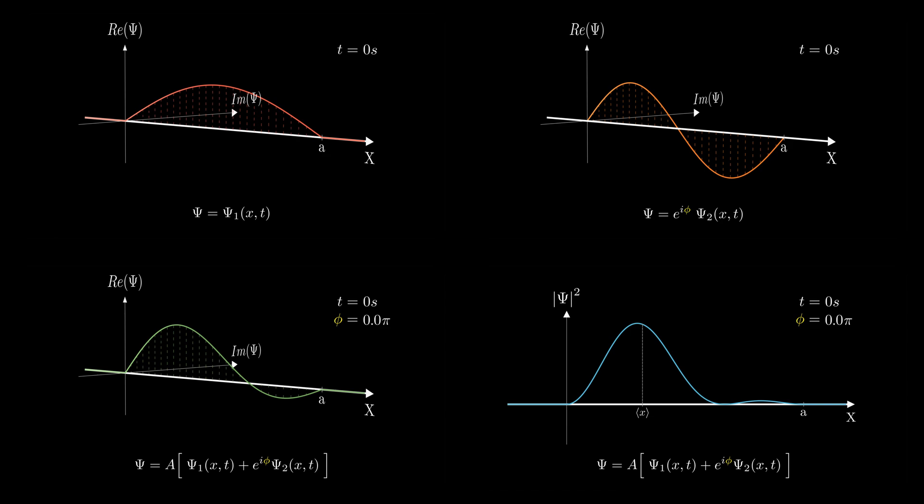I've also plotted the expectation value of x on this graph. As we start changing phi, you'll see how both the interference pattern and the expectation value of position begin to shift dynamically.